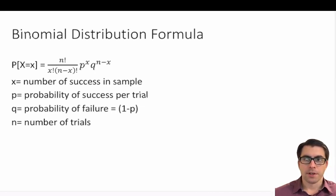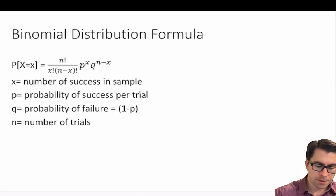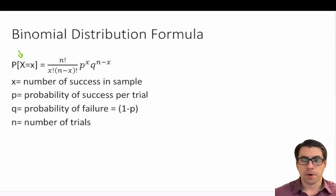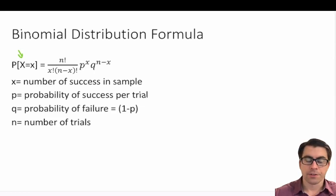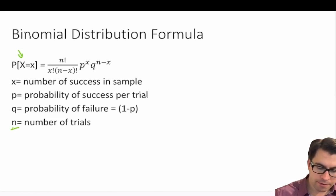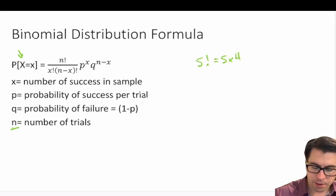We can look at the binomial equation and break it down into manageable steps. We have the probability that X is equal to x, where x is some random variable or variable of interest — perhaps the number of wins in a season — equal to some numerical value. This equals n factorial, where n is the number of trials. Recall that 5 factorial equals 5 × 4 × 3 × 2 × 1.